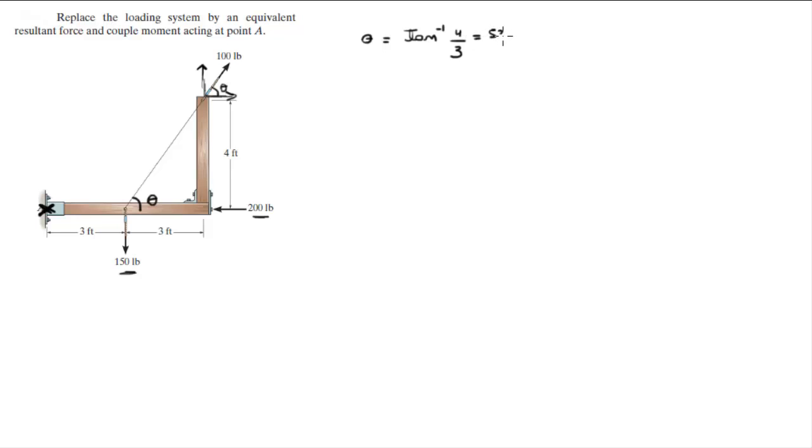So if you want to find the X and Y components of this force, let's call this force F. Then F in the X is equal to 100 cosine of theta, and F in the Y is equal to 100 sine of theta. So this is 60 and this is 80. This is 60 in the X and this is 80 in the Y.